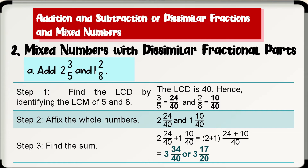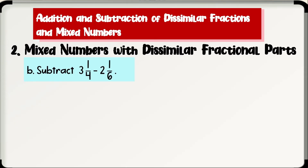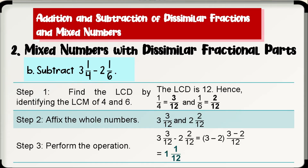Letter B: subtract 3 and 1 fourth minus 2 and 1 over 6. Step 1: find the LCD by identifying the LCM of 4 and 6 — the LCD is 12. Hence, 1 fourth equals 3 over 12 and 1 over 6 equals 2 over 12. Step 2: affix the whole numbers — we have 3 and 3 over 12 and 2 and 2 over 12. Step 3: perform the operation. Subtract the whole numbers — 3 minus 2 equals 1. Subtract the numerators — 3 minus 2 is 1. Copy the denominator 12. Therefore, 3 and 1 fourth minus 2 and 1 over 6 is equal to 1 and 1 over 12.